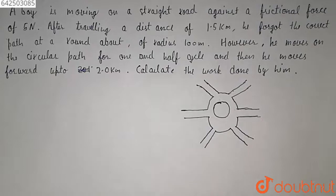The roundabout has a radius of 100 meters. However, he moves on the circular path for 1.5 cycles and then he moves forward up to 2 kilometers. So we have to calculate the work done by him.